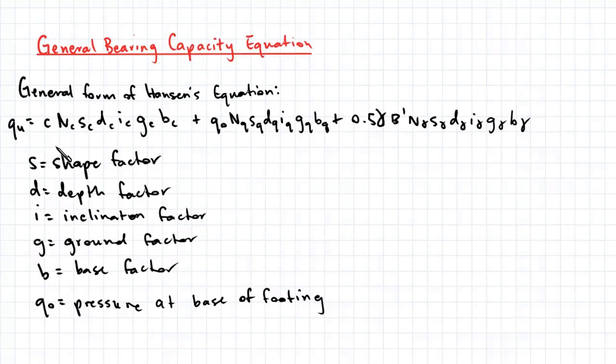C here represents the cohesion of a soil. Q0 here represents the pressure experienced at the base of the footing. Gamma represents the unit weight of the soil, and B represents the width of the footing.